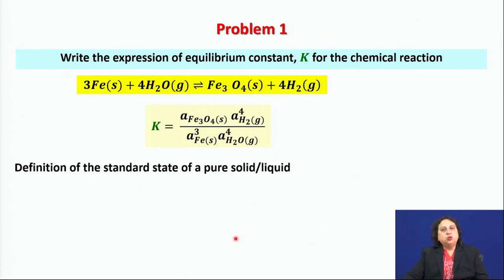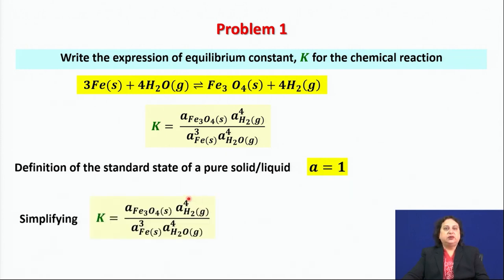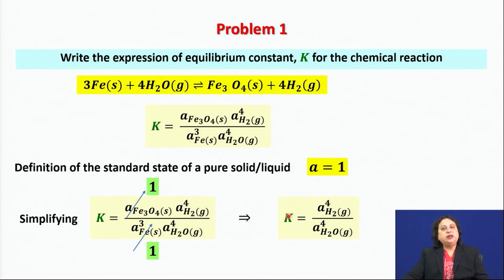We apply the standard state definition: for a pure solid or liquid, activity equals 1. This simplifies our expression for K. Fe₃O₄ is a pure solid, so its activity is 1. Iron is also a pure solid, so its activity is 1. Therefore, the equilibrium constant now depends only on the activity of hydrogen gas raised to the power of 4, divided by activity of water vapor raised to the power of 4.